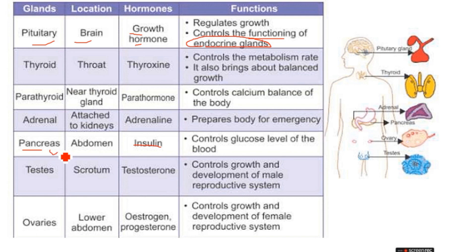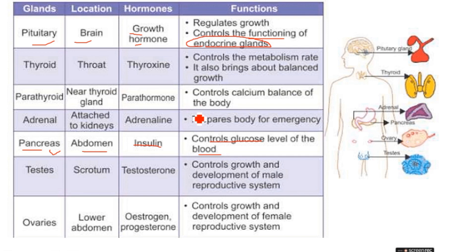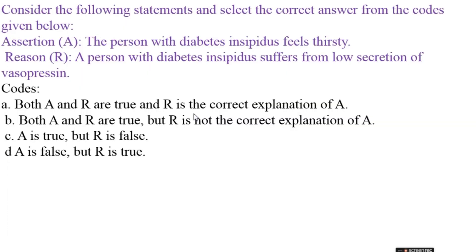The pancreas controls the glucose level in the blood. This is an important part of the blood and hormone system.